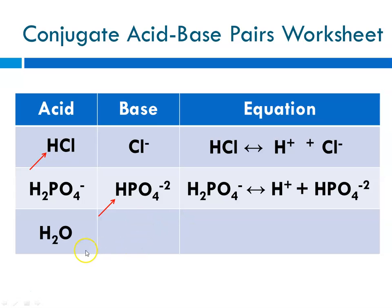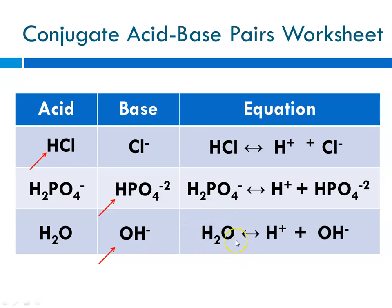The third example has water, so the base column will have one less hydrogen, giving OH⁻. You lost an H⁺, so it went from neutral to a charge of minus 1. The equation is H2O breaking apart to H⁺ and OH⁻, with neutral charge on both sides. Hopefully you'll be able to complete the rest of this worksheet. I will be making another tutorial about pH and pOH calculations soon. This is Ms. Augustine signing off.